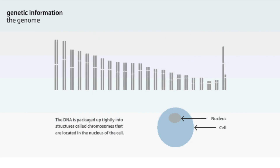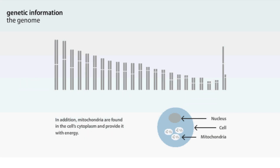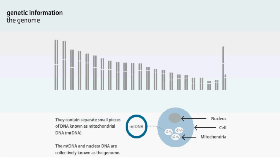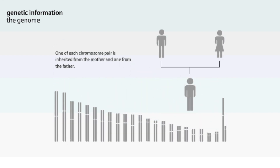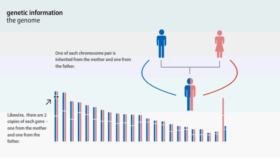DNA is packaged up tightly into structures called chromosomes that are located in the nucleus of the cell. Humans have 23 pairs of chromosomes. In addition, mitochondria are found in the cell's cytoplasm and provide it with energy. They contain separate small pieces of DNA known as mitochondrial DNA. The mitochondrial DNA and nuclear DNA are collectively known as the genome. One of each chromosome pair is inherited from the father and one from the mother. Likewise, there are two copies of each gene, one from the mother and one from the father.